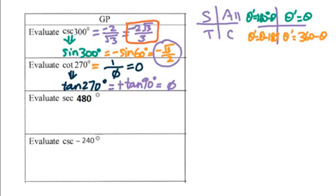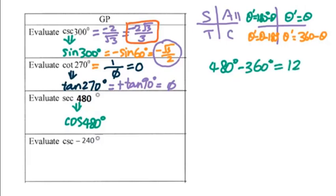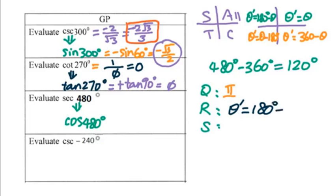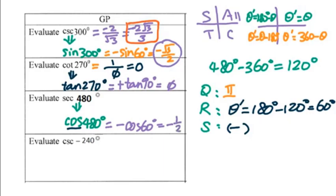Let's go to secant 480 degrees. That means we're looking for cosine 480 degrees. Since it's greater than 360, we subtract 360 and get 120 degrees. Then QRS: the quadrant is the second quadrant. The reference angle is 180 minus 120, which is 60 degrees. For cosine in the second quadrant, it's negative. So we get negative cosine 60, which is negative 1 over 2. Therefore, secant 480 is the reciprocal: negative 2.